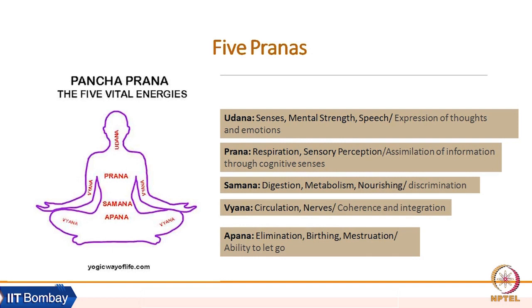Then comes prana vayu — prana itself. Prana vayu is mostly active in the chest and thorax area and is related to respiration, memory, and sensory perception. At the emotional level, it is connected to the assimilation of information. We all keep getting different stimuli, but our ability to process those stimuli is different, and that difference is caused by the prana vayu. The strength of prana vayu decides how we assimilate the information we receive through our cognitive senses.